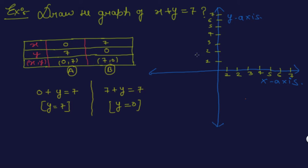So first, plot (0, 7). This is the origin, represented at (0, 0). And 7 is the distance traveled in the direction of the positive y-axis — 1, 2, 3, 4, 5, 6, 7. So this point A has coordinates (0, 7). And point B is (7, 0), where 7 is the distance traveled along the positive x-axis — 1, 2, 3, 4, 5, 6, 7. So this is (7, 0).